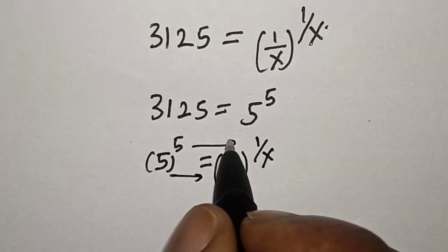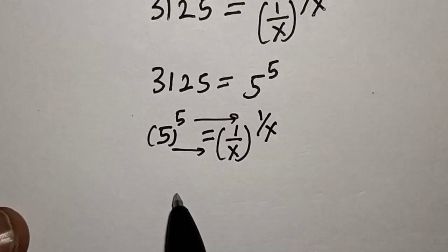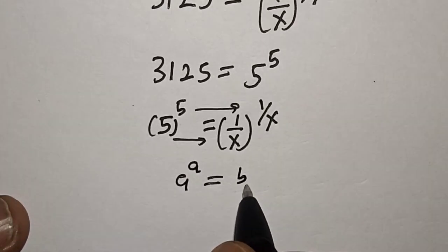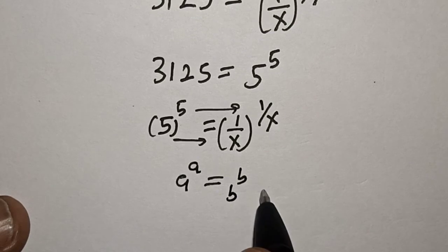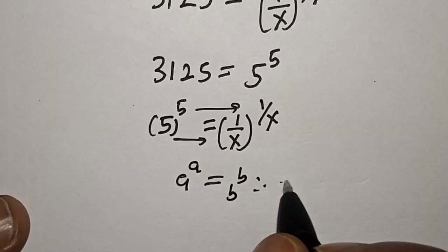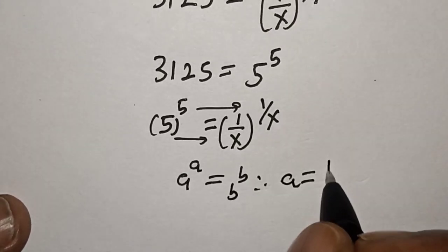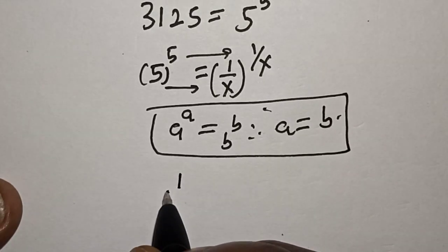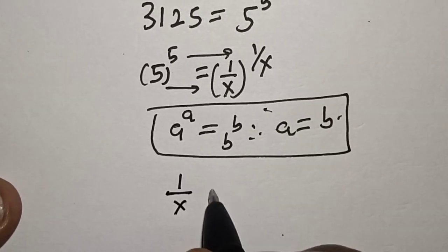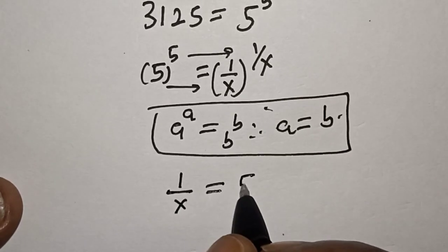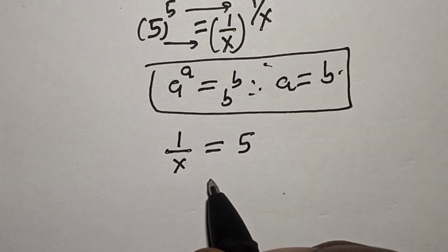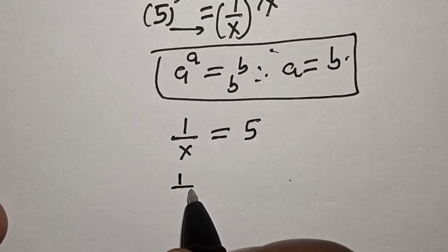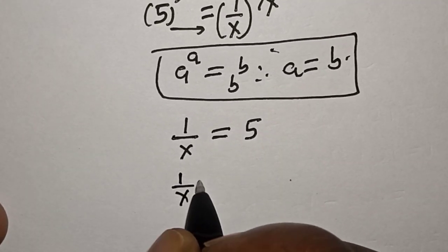If you check carefully, these two sides match the pattern: if a raised to power a is equal to b raised to power b, then a is equal to b. Therefore, 1 over s is equal to 5.